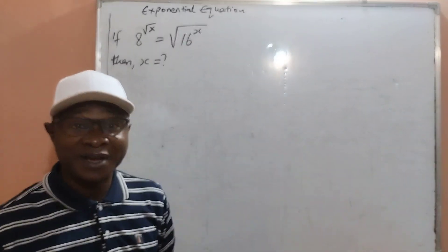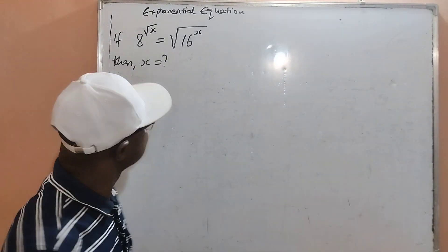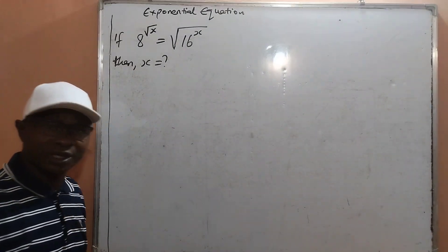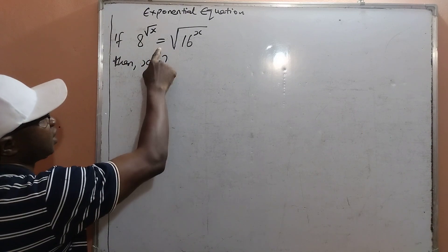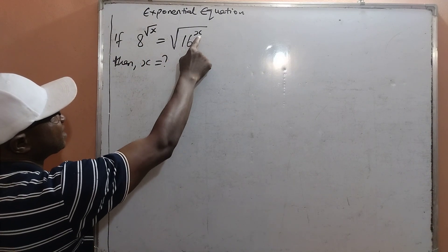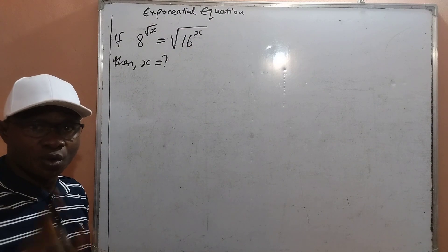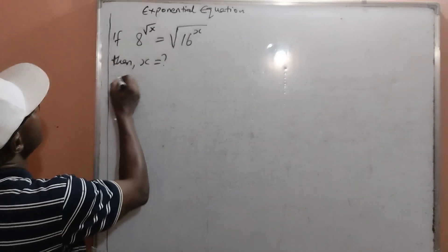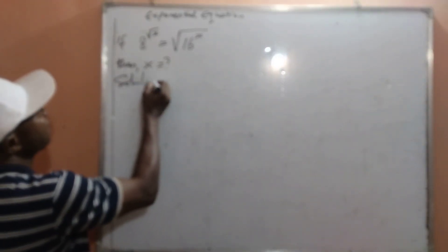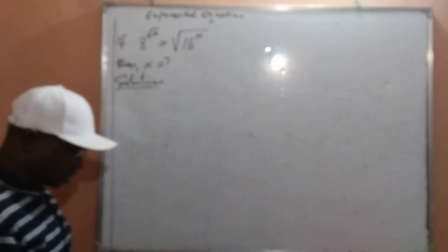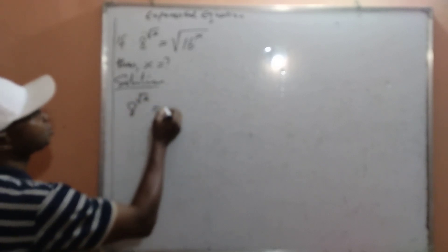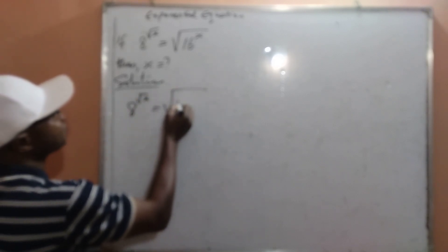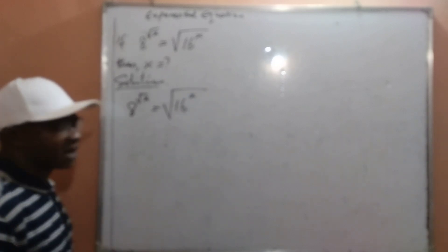Welcome viewers. Now is the hour of mathematics. We have an exponential equation: if 8 raised to the power square root of x is equal to the square root of 16 raised to the power of x, then what would be the value of x? A quick one — we dive in straight away. The given question is 8 raised to the power square root of x, equal to the square root of 16 raised to the power of x.